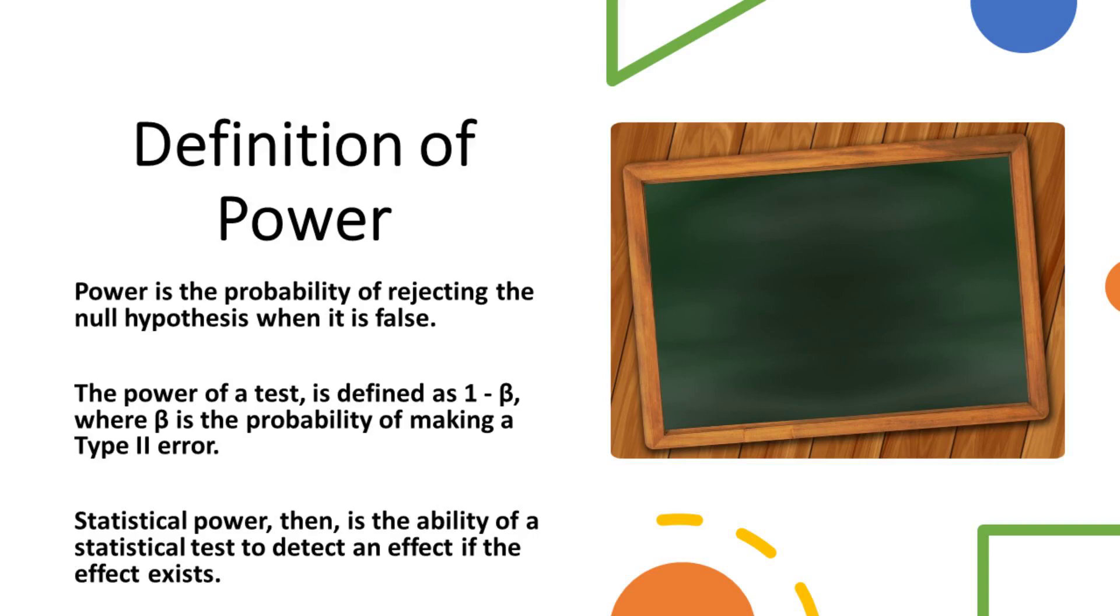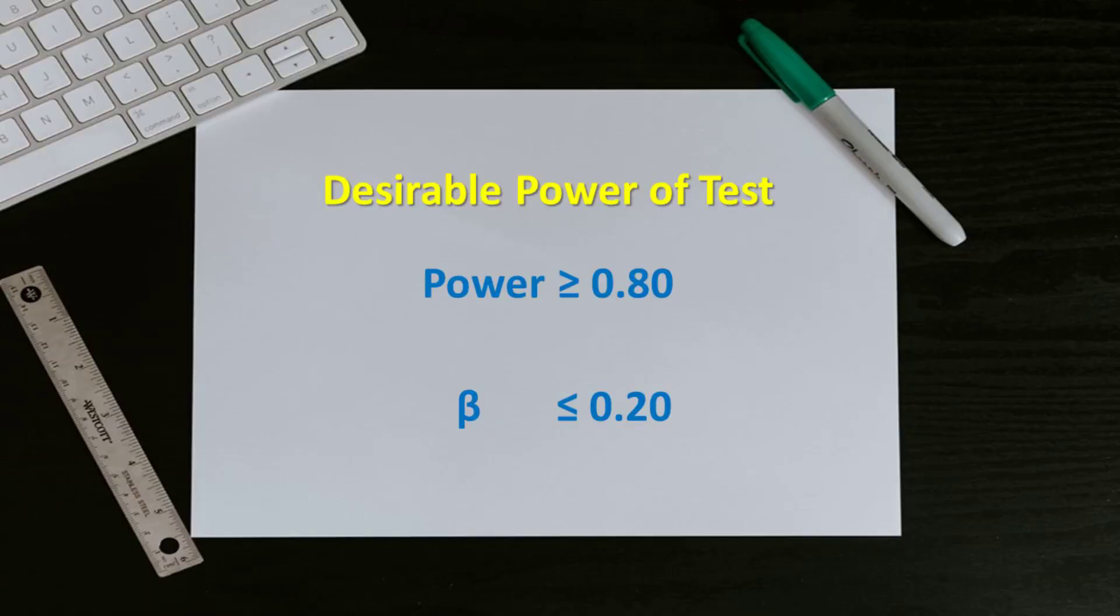By increasing the statistical power of our tests, we can enhance the accuracy and validity of our findings, ultimately leading to more informed and dependable outcomes. Conventionally, a test with power greater than 0.80, or beta less than or equal to 0.2, is considered statistically powerful. This means that there is a high probability of the test correctly rejecting the null hypothesis when it is false.